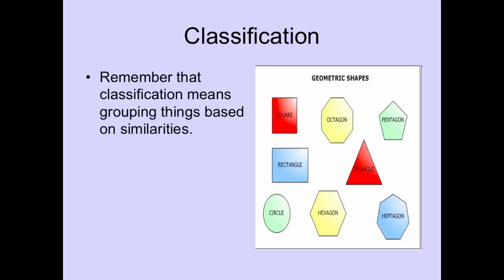Remember that classification means grouping things based on their similarities. Kind of like we did in class the other day — if I asked you to group these, the broadest category would be their shape. If you're a square, you're not an octagon; if you're a pentagon, you're not a rectangle. Then if I asked you to classify in even more detail, you could go by color: red, yellow, green. So classification is just grouping things based off their similarities.